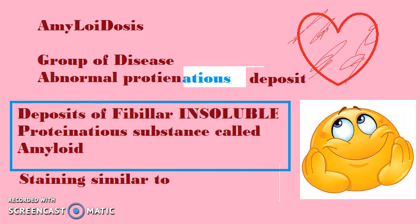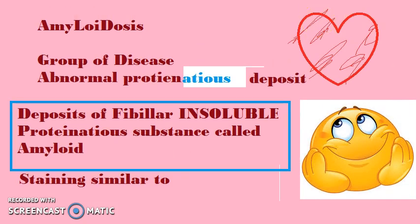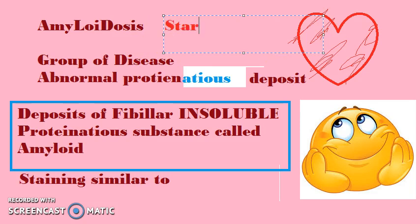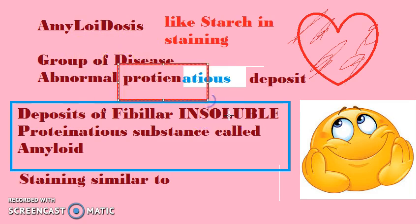Why is it called amyloid? The suffix '-oid' means 'like something.' Amyloid relates to amylase — amyloid means starch-like. In staining, it behaves like starch, because when you add iodine it stains similarly, as you may recall from biochemistry. Scientists initially thought it was starch, but it turned out to be protein — hence the name amyloid.